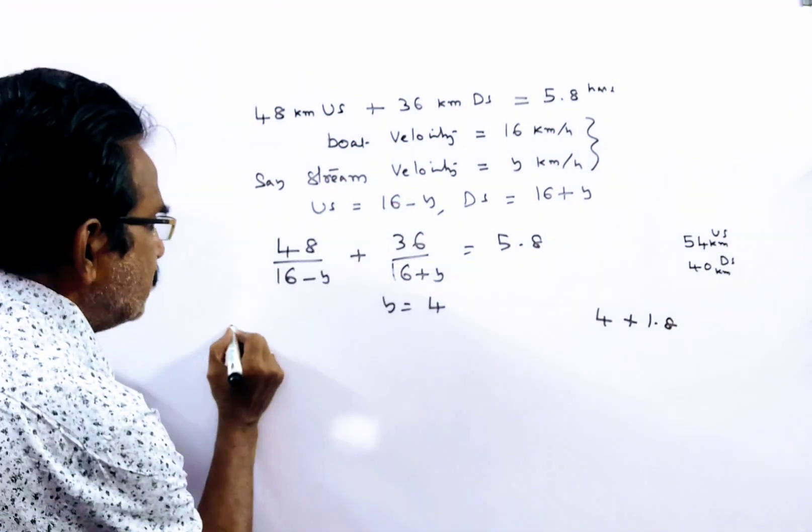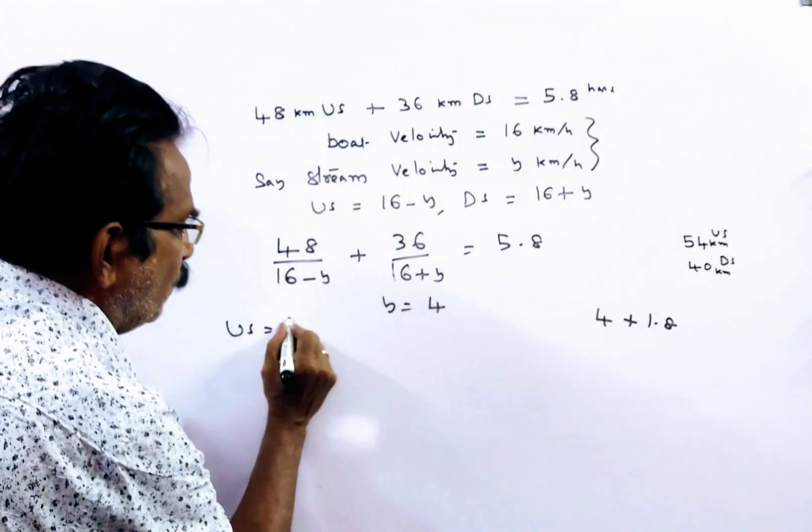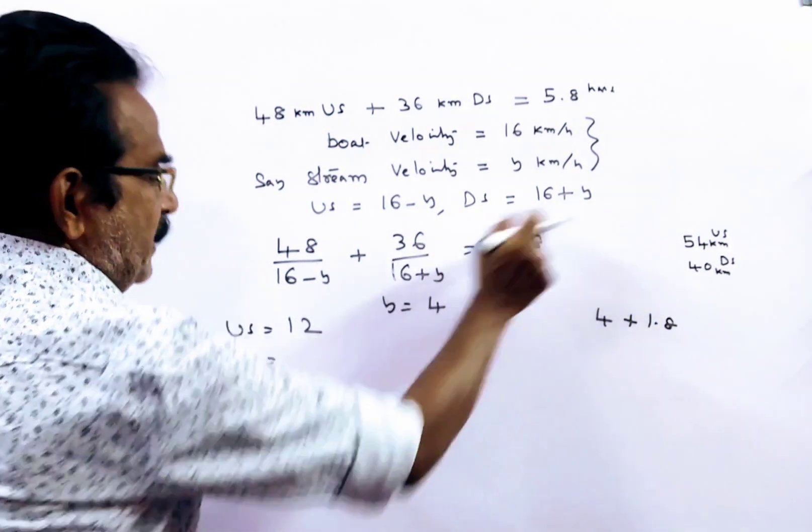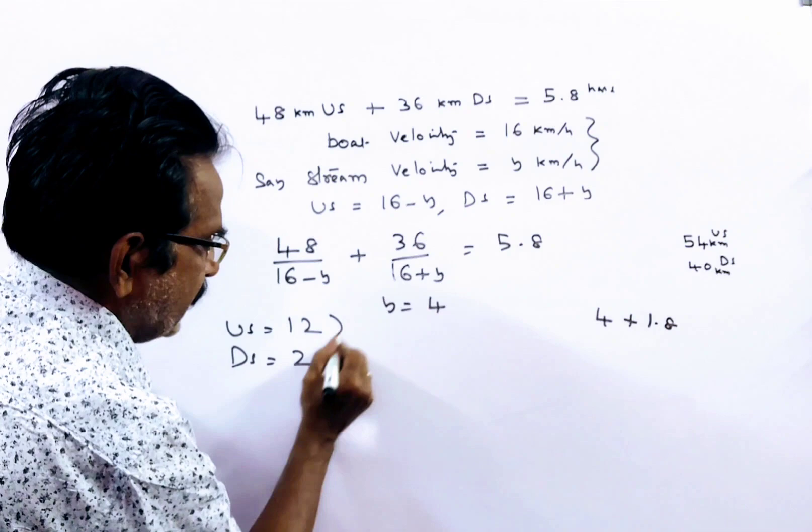Now, upstream velocity is 16 minus 4, which is 12 kmph, and downstream velocity is 16 plus 4, which is 20 kmph.